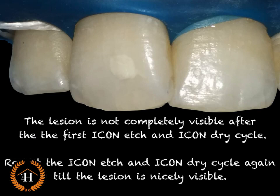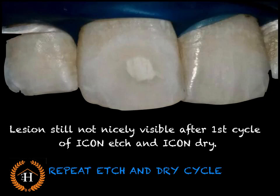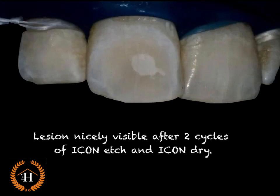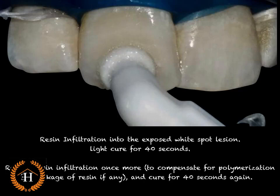The idea of etching and dehydrating is to make sure the lesion is completely visible. As we see on the screen right now, the lesion is not completely visible and looks as if it's covered with some demineralized area on top. If that happens, we need to repeat the etch and dry cycle. Once we repeat — the same etchant for about 30 seconds activation and two minutes drying, then the Icon Dry again — after two cycles the white spot became very clearly visible, and then comes the decisive step of resin infiltration.